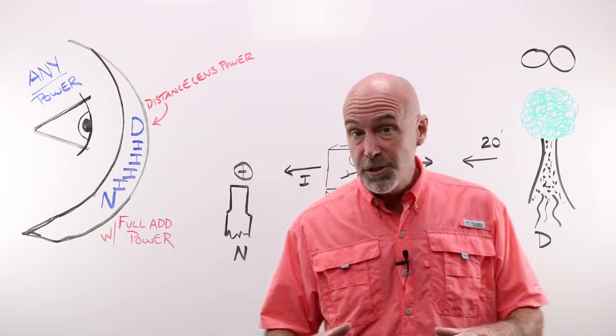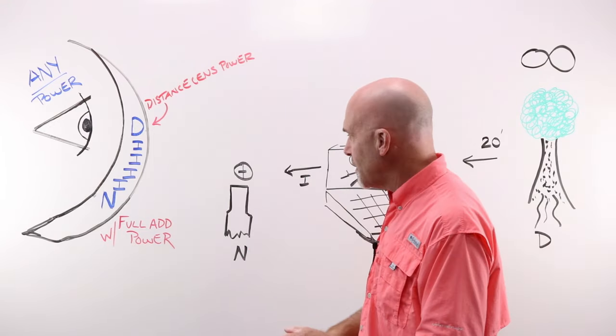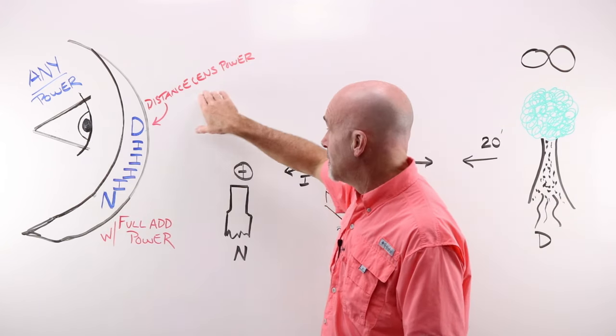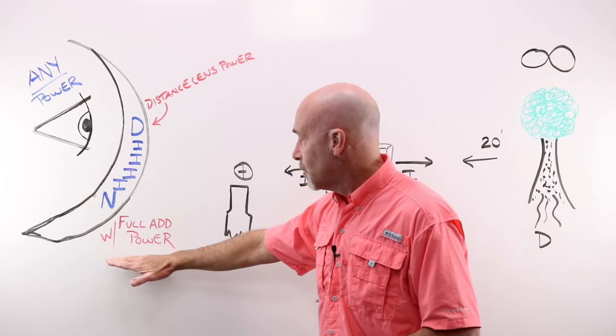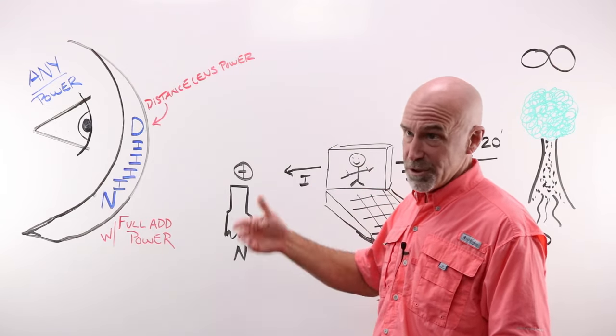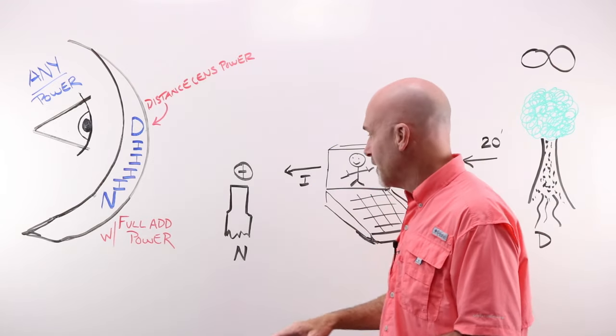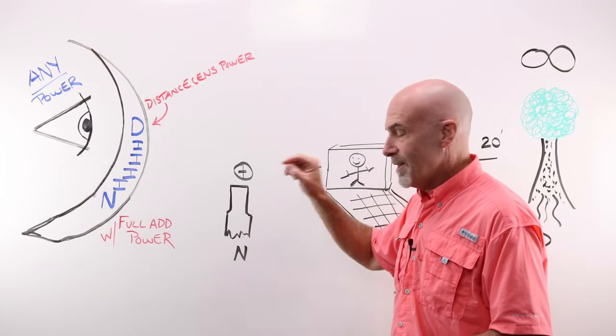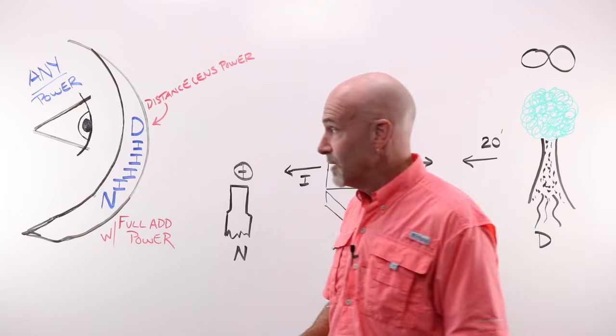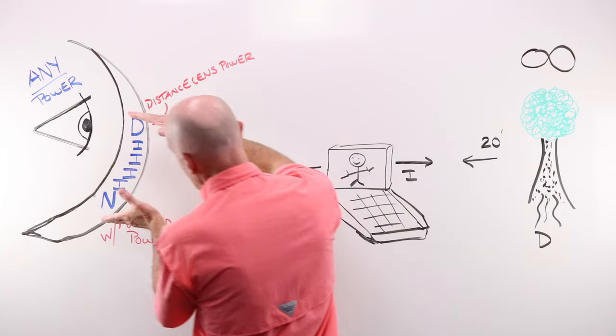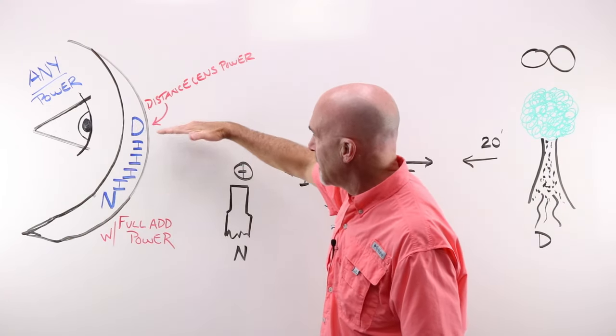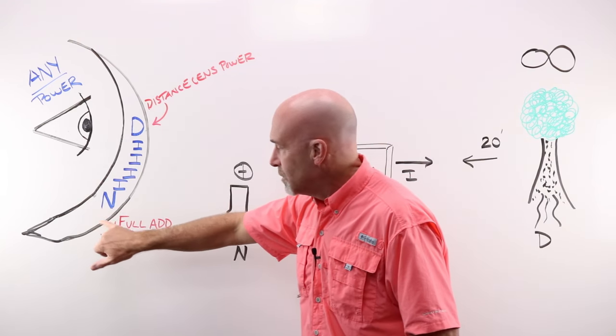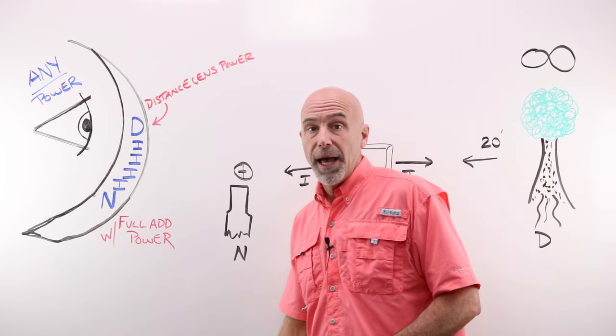Now, because you are an optician, you also, of course, need to work on those little tiny things. So, in addition, you have your near full power. That's your distance power combined with your full add power, whatever that might be. One, 125, 150, 175. And you can see the head of your screwdriver to put it in that little tiny slot on that little tiny screw on a pair of eyeglasses.